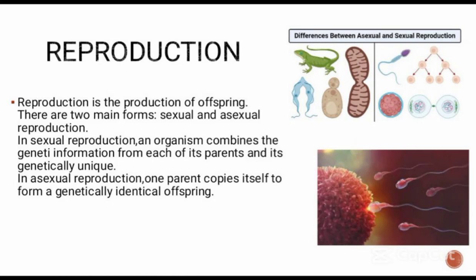The next one is reproduction. Reproduction is the production of offspring. There are two main forms: sexual and asexual reproduction. In sexual reproduction, an organism combines the genetic information from each of its parents and is genetically unique. In asexual reproduction, one parent copies itself to form a genetically identical offspring.